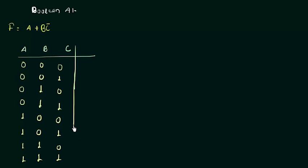These are the possible combinations. Now we have to see for which values of a, b, and c the function f is true. When a, b, and c are all zero, the function is zero. When a and b are zero and c is one, the function is again zero. When a is zero, b is one, and c is zero, the function is one — because b is one and c̄ is one, so zero OR one is one. When a is zero, b is one, and c is one, the function is zero. For all the last four cases where a is one, the function is one, because anything OR'ed with one is always one.